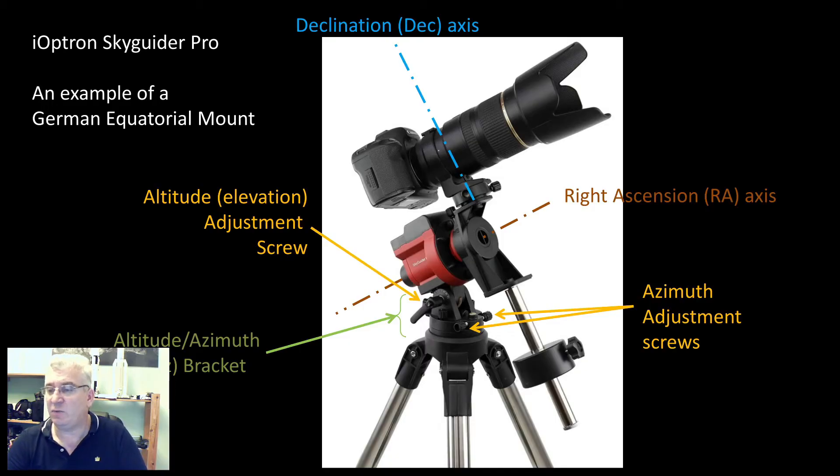Now, to assist us with knowing where to point the right ascension axis, a lot of these mounts actually embed a small telescope inside the mount. The Ioptron Skyguider Pro has what's called a polar scope inside the body of the mount. This is the lens cap and this is the cap over the eyepiece. You pull out those, remove those two items.